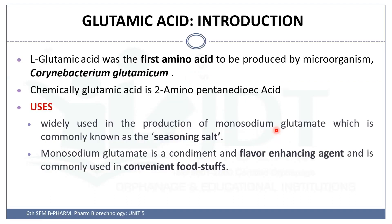We will start with an introduction to glutamic acid. Glutamic acid is an amino acid which is the first amino acid to be produced by a microorganism like Corynebacterium glutamicum. Chemically, this glutamic acid is 2-aminopentanedioic acid. It is mainly used in the production of monosodium glutamate, which is commonly known as a seasoning salt, and is a flavor enhancing agent used in convenience foods.